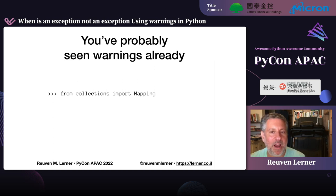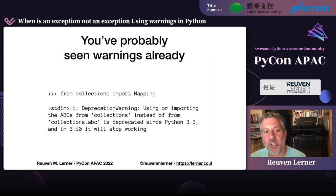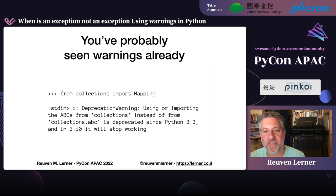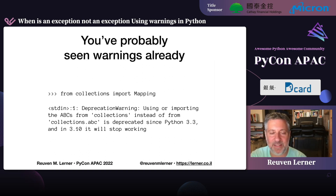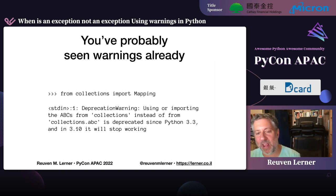But we knew several years in advance this was going to change and wanted to give people a chance to change their ways. Already in Python 3.3, if you tried to do 'from collections import Mapping,' you would get a deprecation warning saying: 'using or importing the ABCs from collections instead of from collections.abc is deprecated since Python 3.3, and in 3.10 it will stop working.' Think of how long this warning was around — assuming a new version of Python every year, that's at least seven years of warnings telling you: you'd better change your ways.